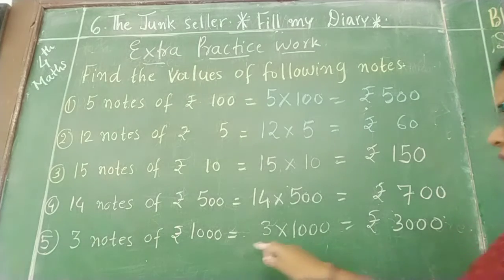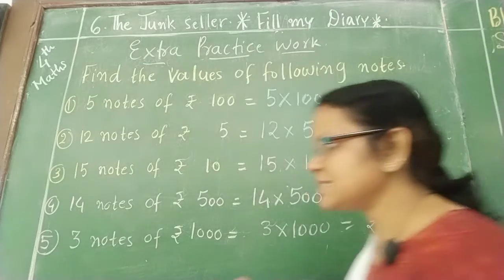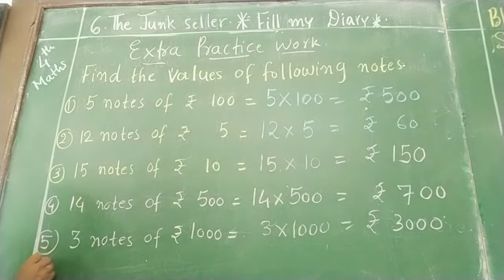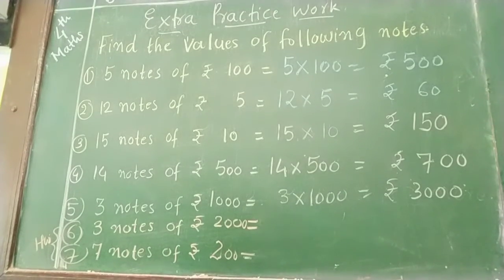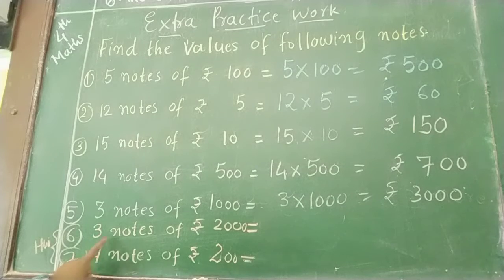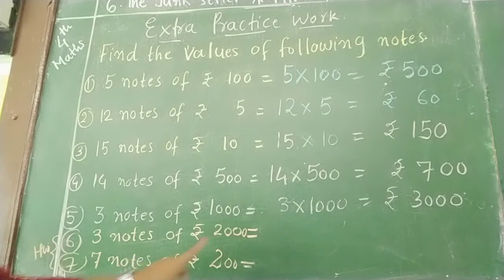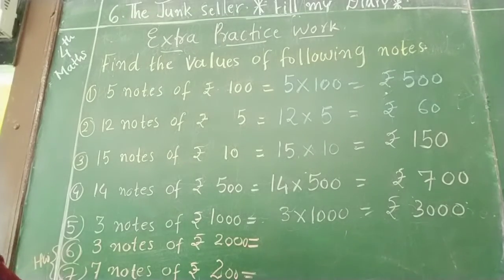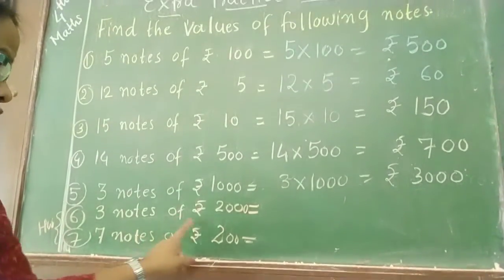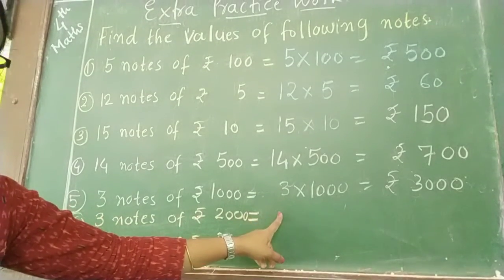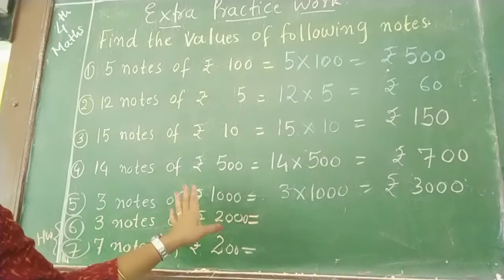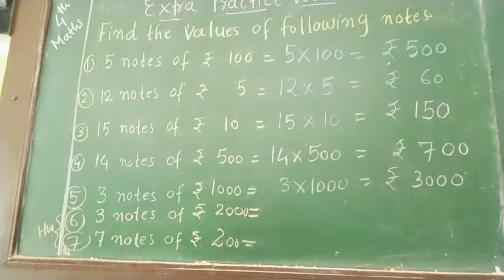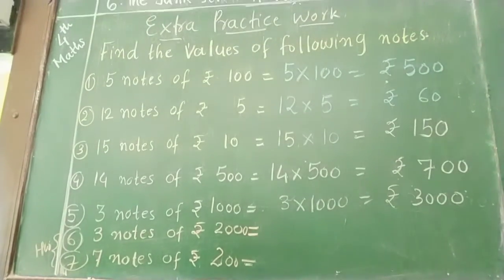So these are the values of the notes. Now, numbers 6 and 7 are homework for you — you will do those by yourself. 7 notes of rupees 200 and 3 notes of rupees 2000 — find those values and write them in your notebook. Very easy to do. Now we will meet in our next session. Bye, and have a good day. Thank you very much.